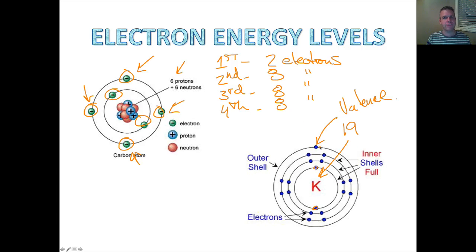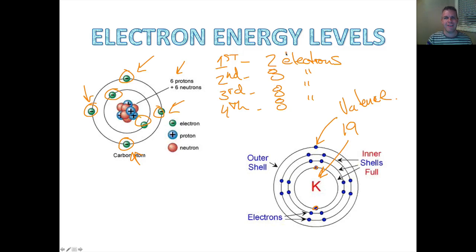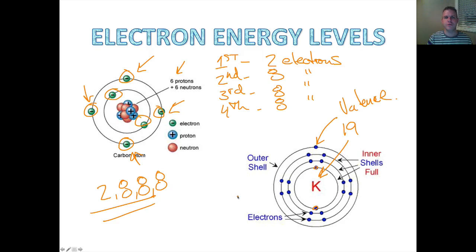Valence electrons are very special — they're used when we form ions, which is what we're getting to. But you need to have an understanding of the energy level. It's always two, eight, eight, eight — always in that order, filling up until all the electrons are placed.